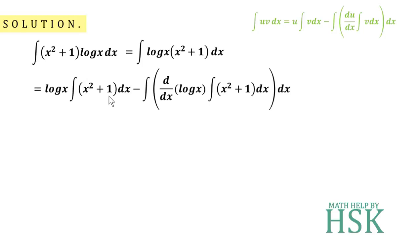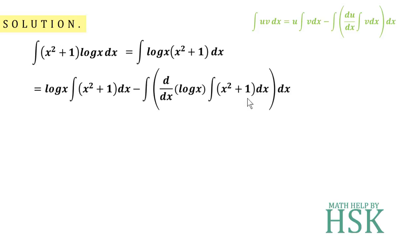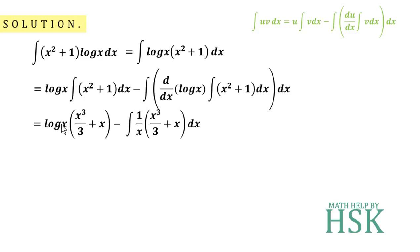Applying the integration by parts formula, I get: log(x) × ∫(x² + 1)dx − ∫[d/dx(log x) × ∫(x² + 1)dx]dx. Now, the integration of x² is x³/3, the integration of 1 is x, and the differentiation of log(x) is 1/x. Again, the integration of (x² + 1) is x³/3 + x. Placing the values gives: log(x)·(x³/3 + x) minus...